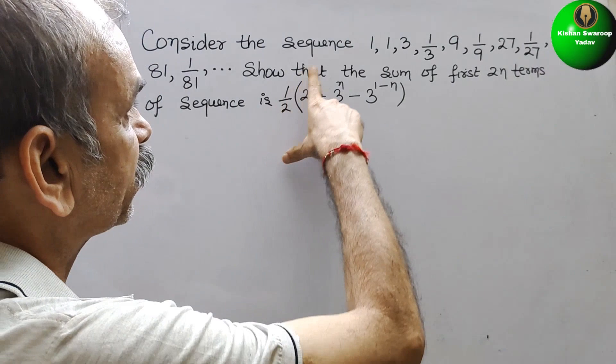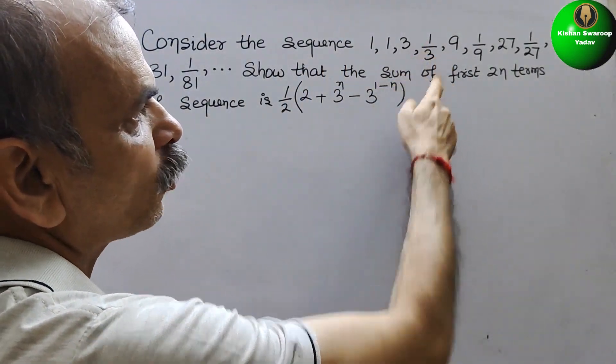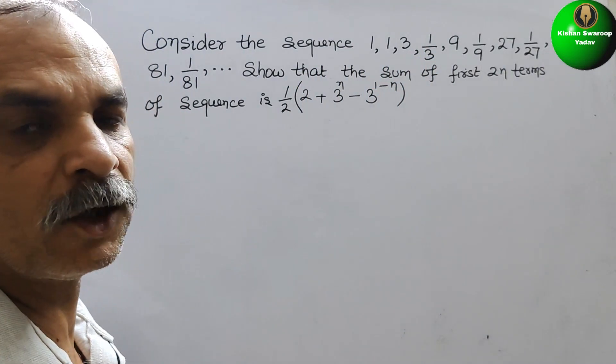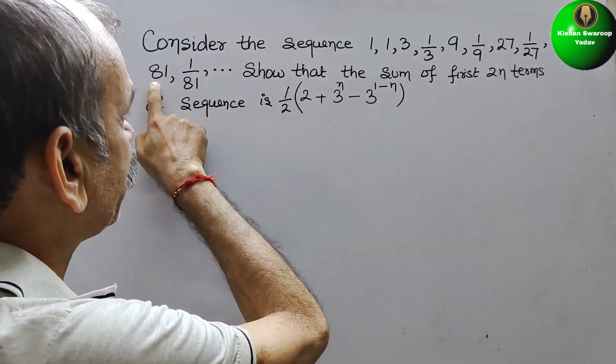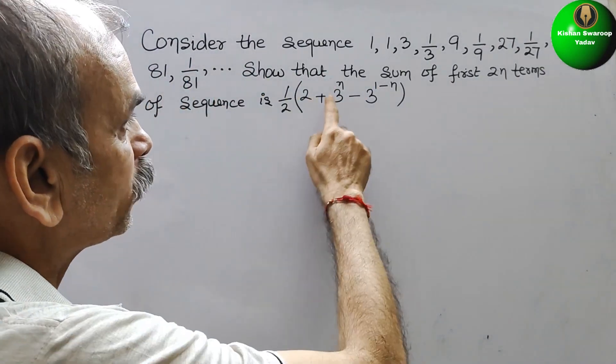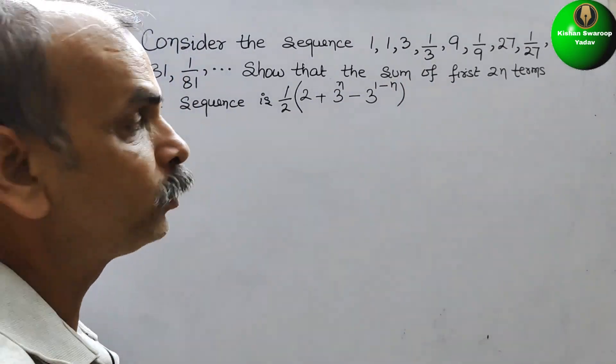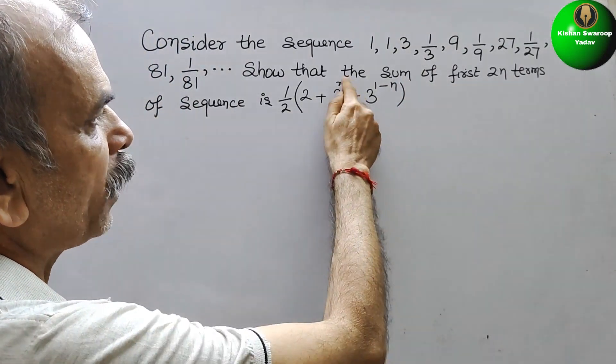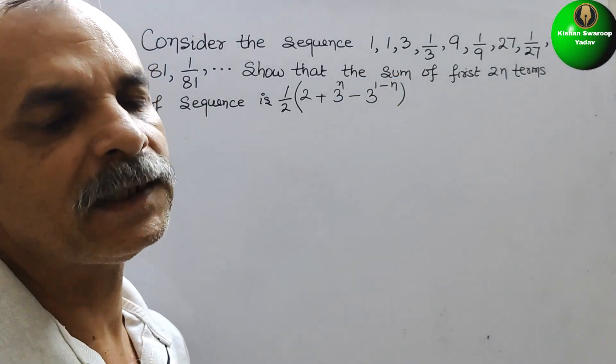Your question is, consider the sequence 1, 1, 3, 1/3, 9, 1/9, 27, 1/27, 81, 1/81 and so on. Show that the sum of the first 2n terms of sequence is 1/2(2 + 3^n - 3^(1-n)).